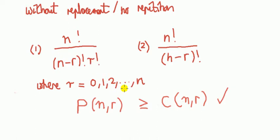But what we said is that the combination is no bigger than the permutations. So it must mean that this expression is for combination, and this is for permutation.